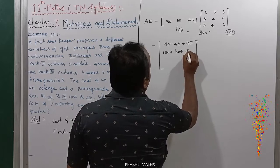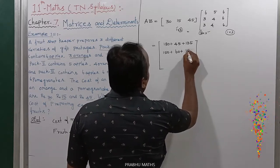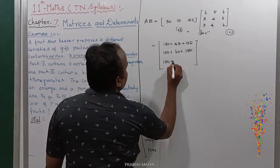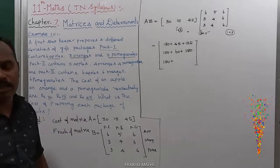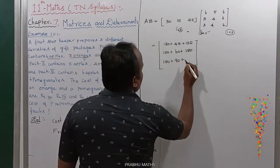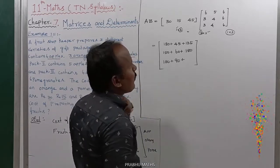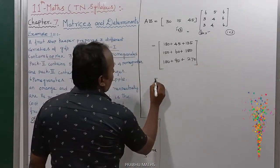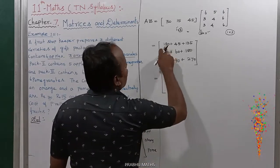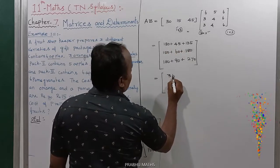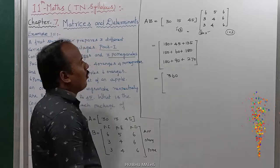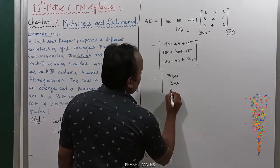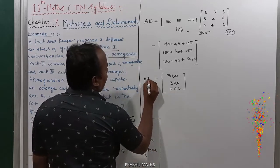First row third column: 30 into 6 = 180, plus 15 into 6 = 90, plus 45 into 6 = 270. So the AB matrix results are: first entry is 180 + 45 + 135 = 360, second entry is 150 + 60 + 180 = 390, third entry is 180 + 90 + 270 = 540.